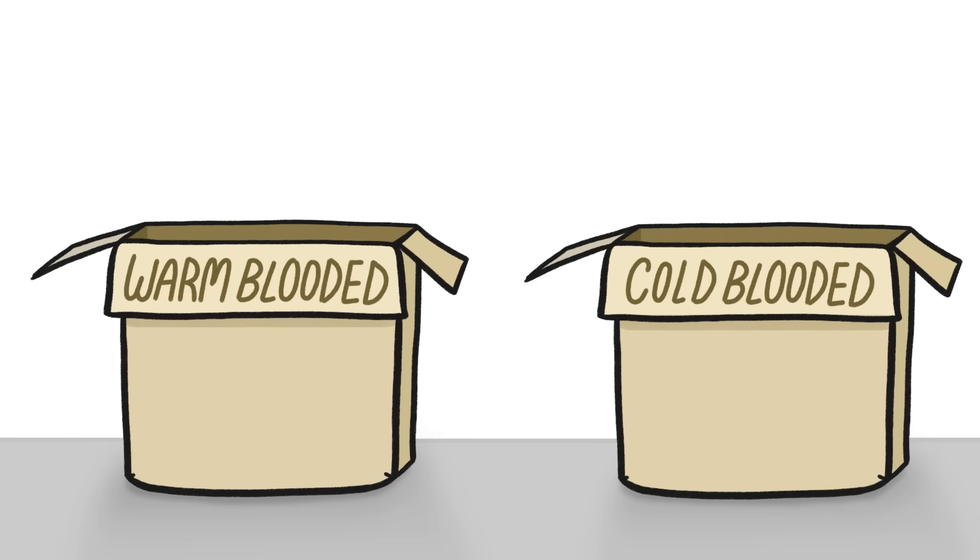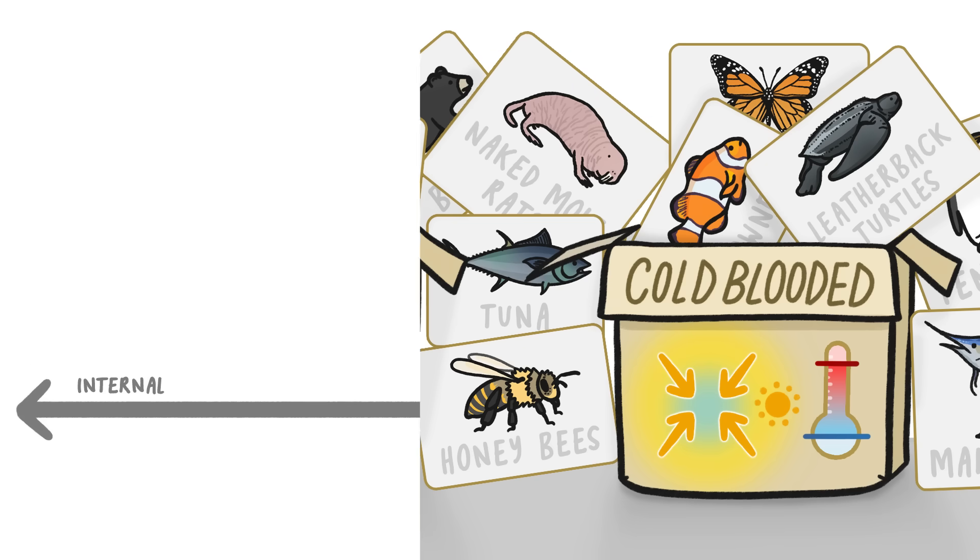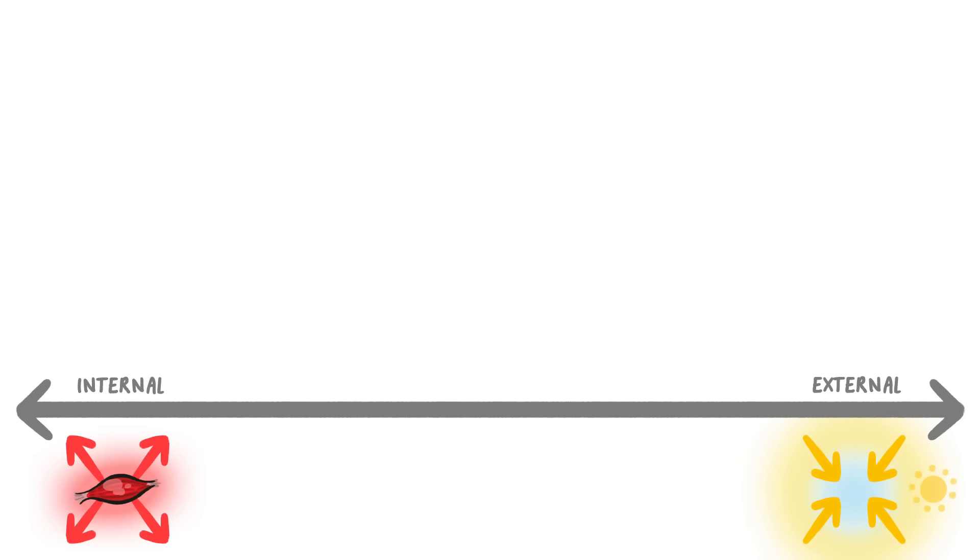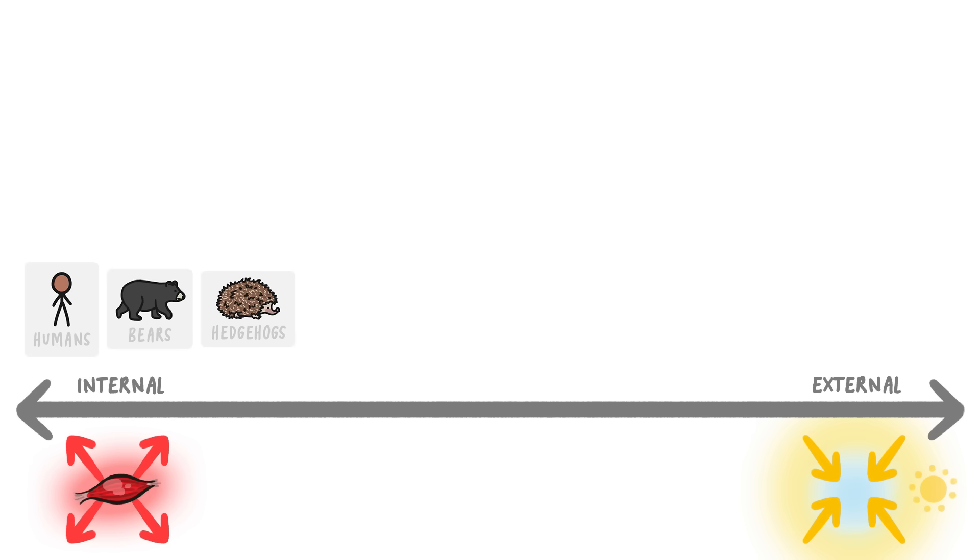When you try to actually categorize animals by their temperature regulation strategies, they don't fit neatly into two buckets. Let's take a look at how animals generate their heat. Mammals like humans, bears, and hedgehogs mostly generate their heat internally, putting them over here.